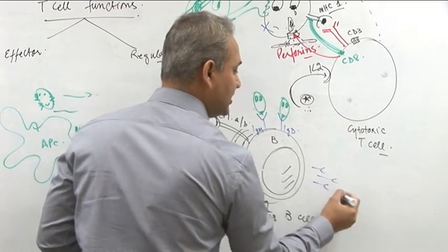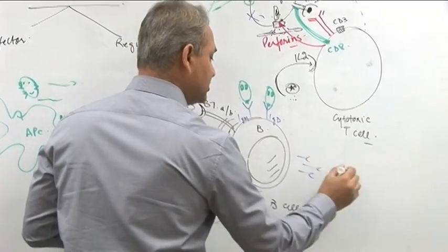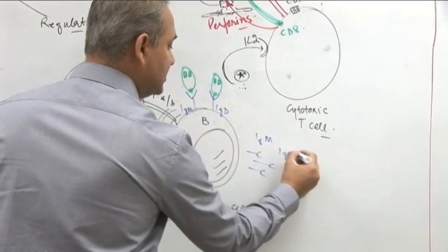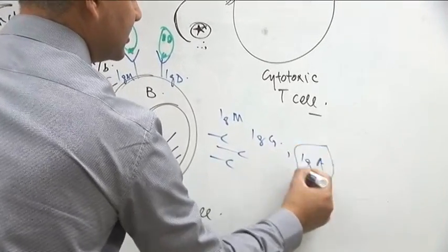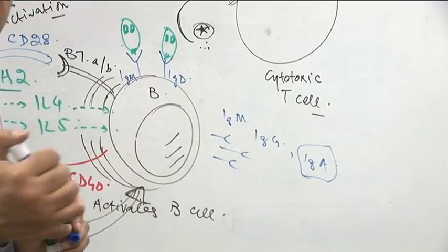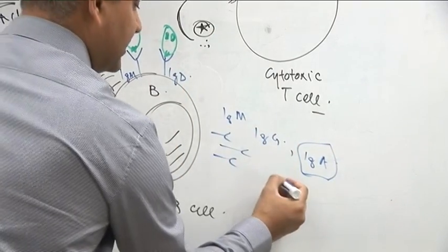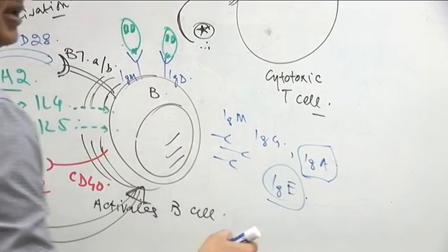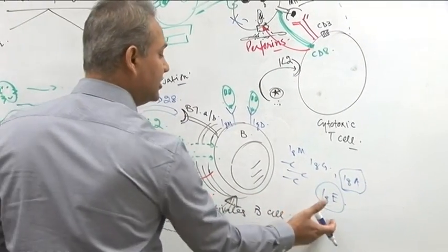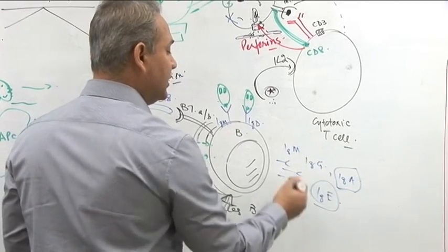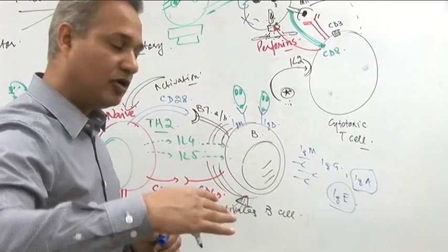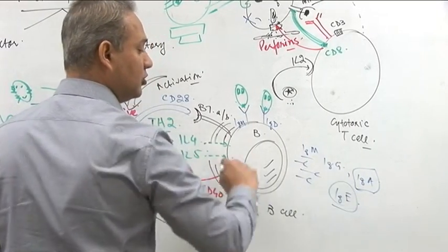So these are the IgM's, IgG's, IgA on the surface of the body, surfaces like mucosa and such, and then IgE that go and sit on the mast cell and become a problem for us for allergies. Remember, IgE for allergies. IgG and IgM are really important. IgM is a primary reaction. IgG is a secondary reaction. We'll talk about it later. But these are the immunoglobulins.